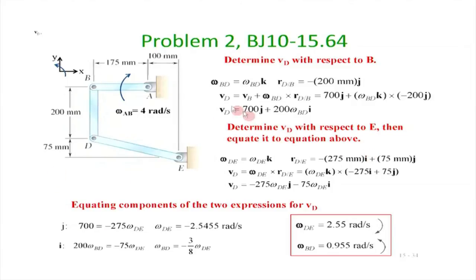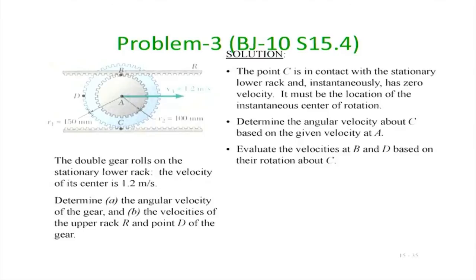Using this top-down approach — starting from A and working all the way to E — and knowing that the absolute velocities of A and E are zero, we can determine the angular velocity of every link in the mechanism. This concludes that problem. The third problem is reasonably straightforward and you can have a look at it later.